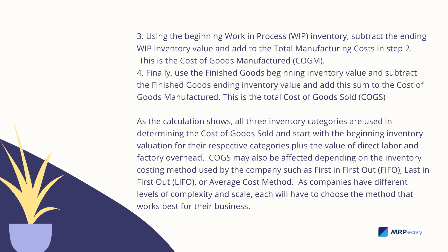As the calculation shows, all three inventory categories are used in determining the Cost of Goods Sold and start with the beginning inventory valuation for their respective categories, plus the value of direct labor and factory overhead. COGS may also be affected depending on the inventory costing method used by the company, such as first-in-first-out (FIFO), last-in-first-out (LIFO), or the average cost method. Each company will have to choose the method that works best for their business.